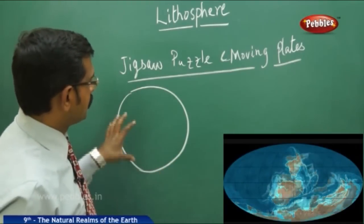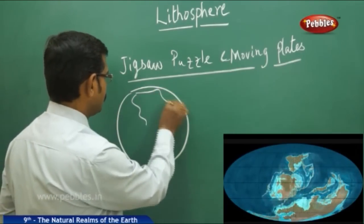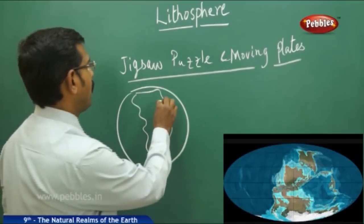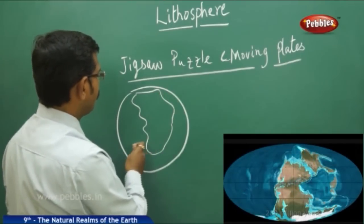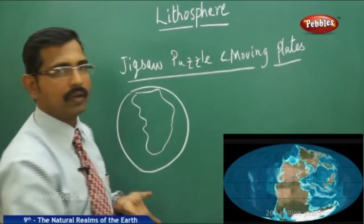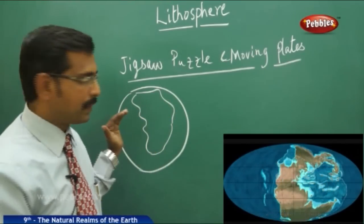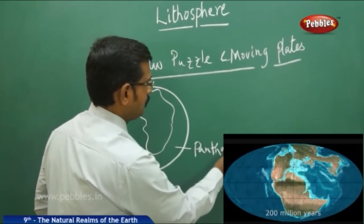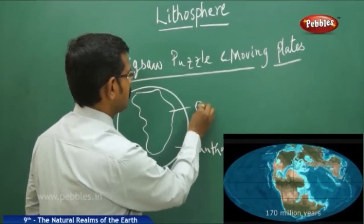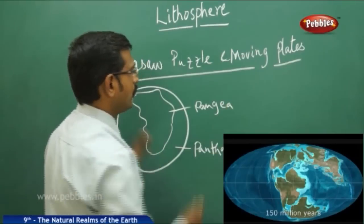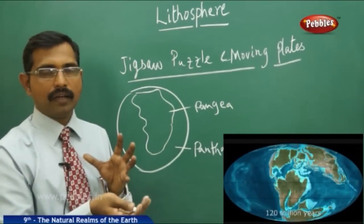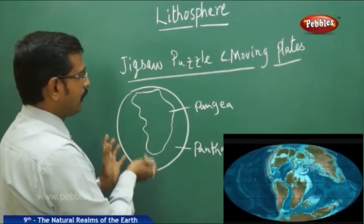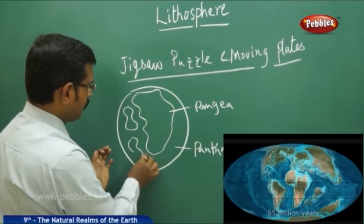Usually, the land was in one major landmass some thousands of millions of years ago, called Pangea, and all the oceans were one water body called Panthalassa. Pangea is the name for that single whole land. Later, due to drifting and geological activities, it drifted and became pieces of land, and now you see those same pieces lying here and there.